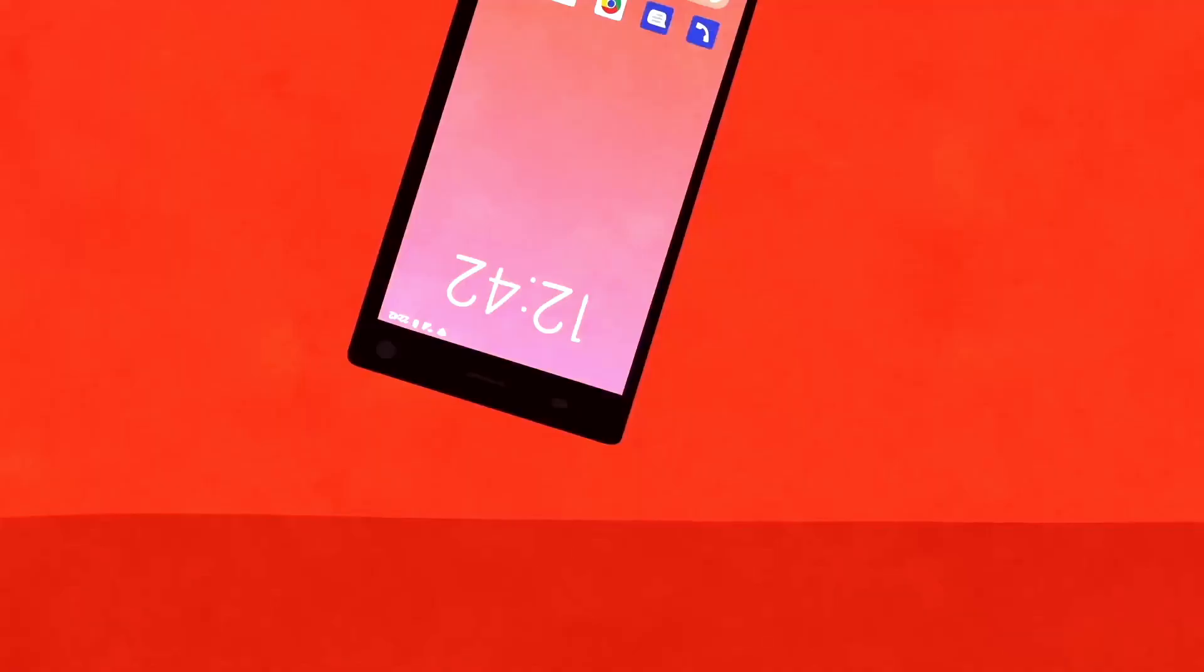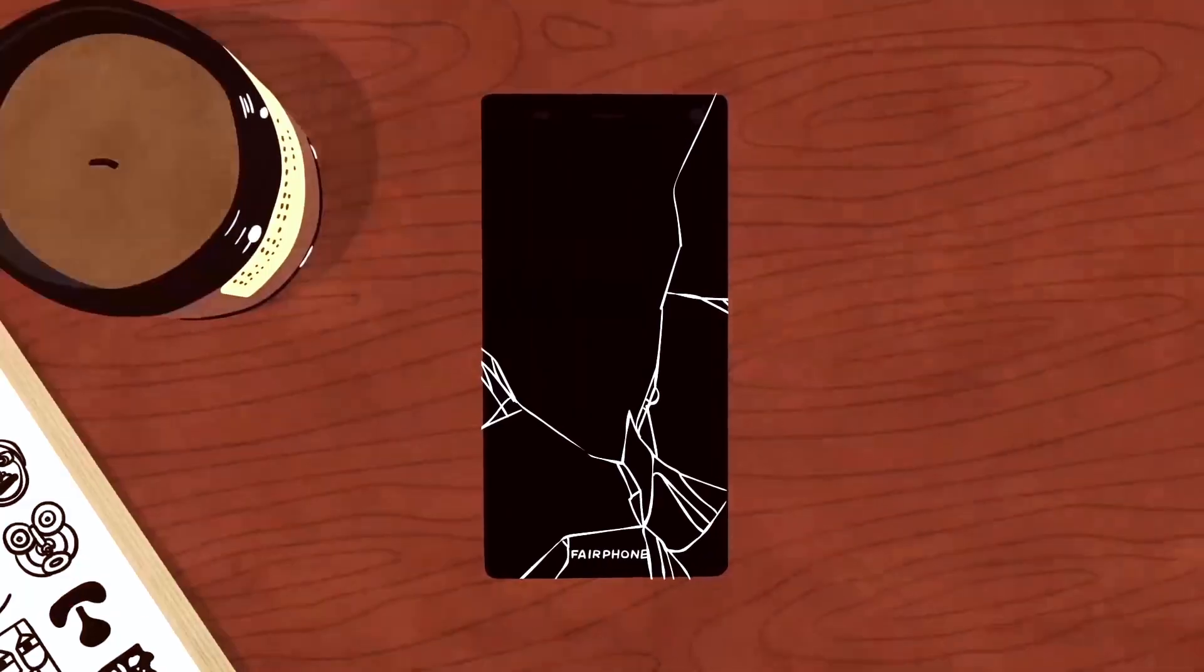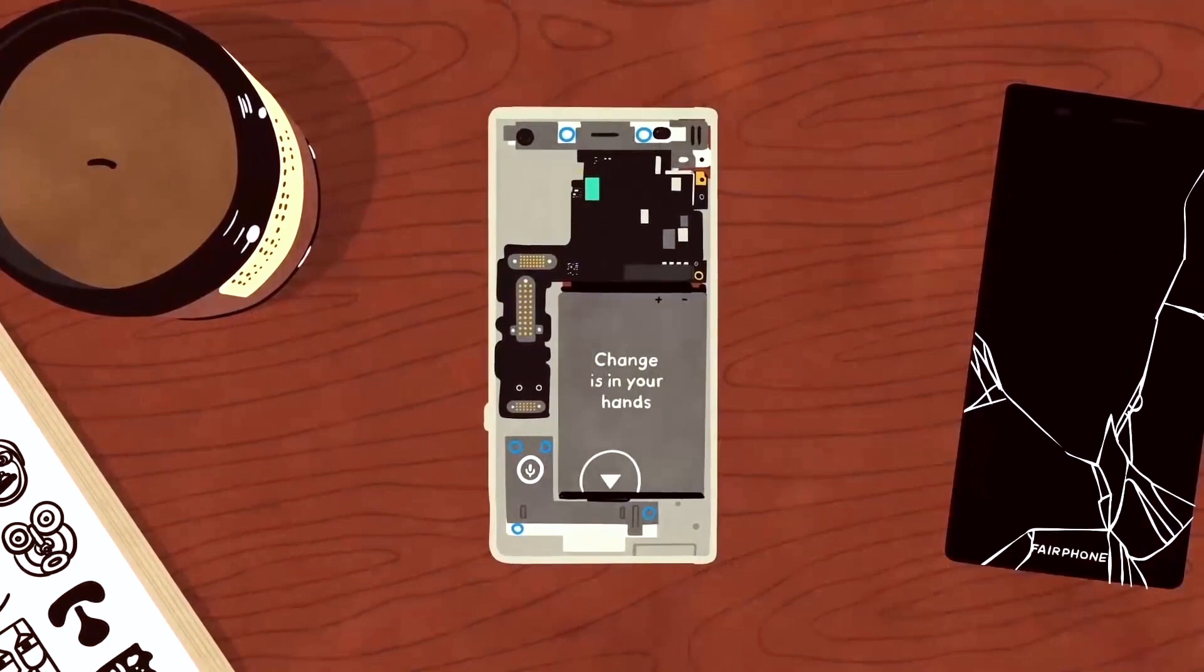So if you accidentally drop the phone and the screen breaks, you can easily replace it. If the battery wears out, you can get a new one. For the camera, we even created an upgraded module because we knew that people would want to take great pictures even when their phone gets older.